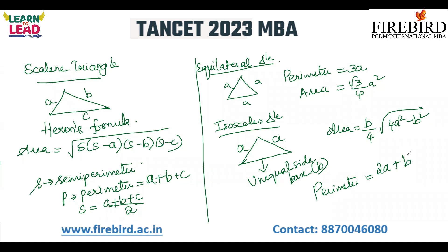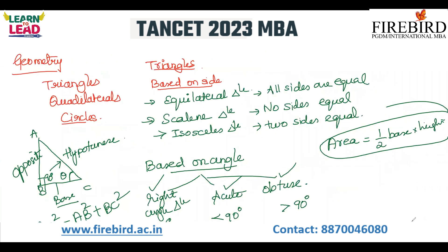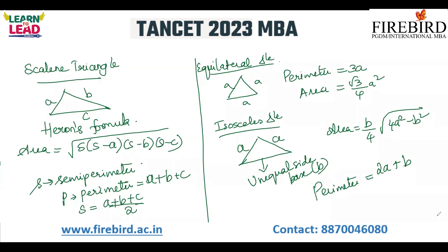So for area calculation, when three different sides are given, that is a definite scalene triangle — we use Heron's formula. If base and height are given, we use area equals half into base into height. Do you understand this? So we have covered the triangles concept.